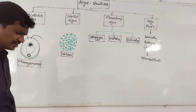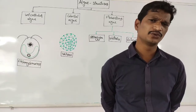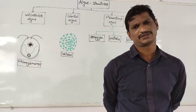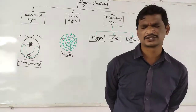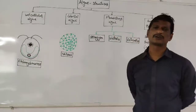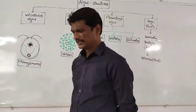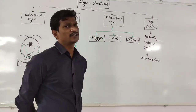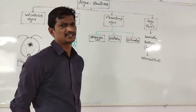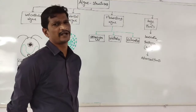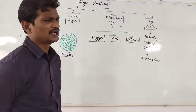Coming to the structure: within algae, the structure ranges from microscopic to huge plant body structures. Some algae are unicellular organisms and some are multicellular organisms. Some have microscopic structure and some have massive plant body structures. That is the diversity within algae structure.